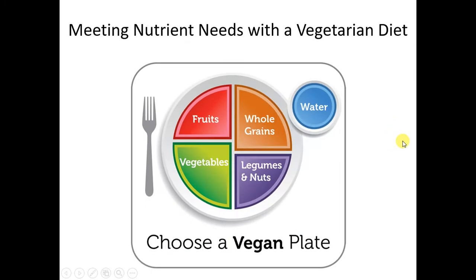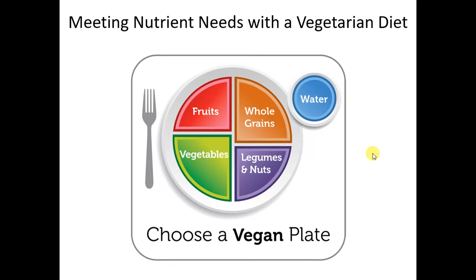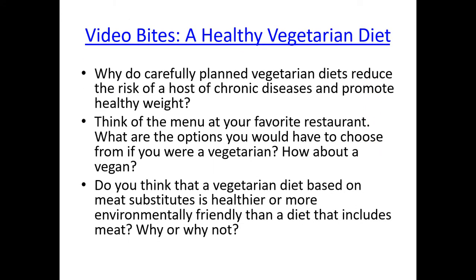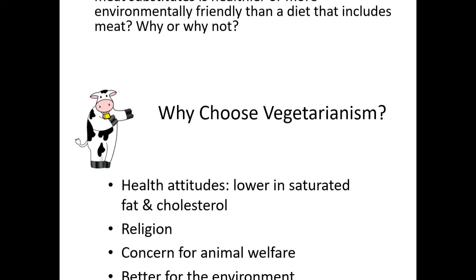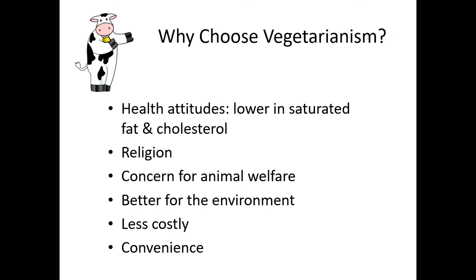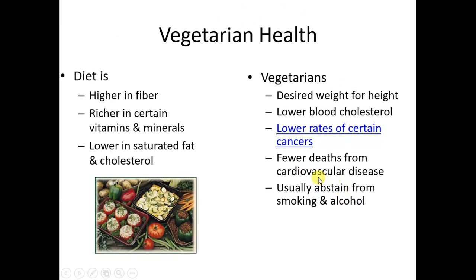Lastly, we're going to talk quickly about vegetarianism. A vegan is a vegetarian who doesn't consume any animal-derived products — no milk, no eggs, no meat, and often no medications or cosmetics with any animal source. But there are lots of different types of vegetarians: those who consume milk, those who consume eggs, those who consume both. The reasons for choosing vegetarianism are many — health reasons, animal welfare, and environmental concerns. Vegetarians who plan a healthy vegetarian diet do quite well in decreasing their risk for a number of diseases and increasing longevity.